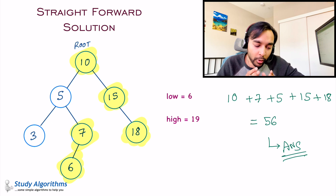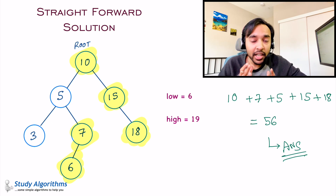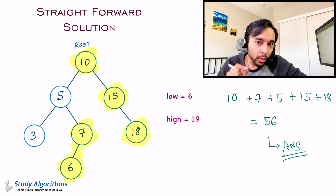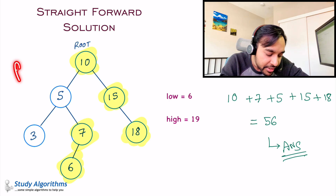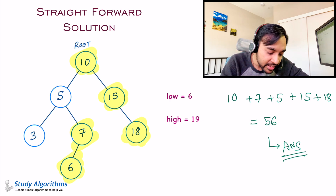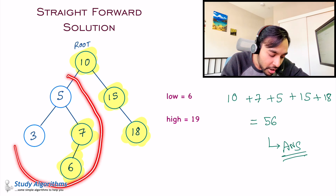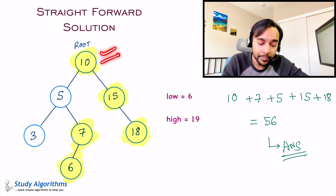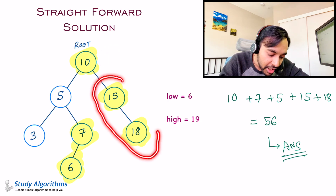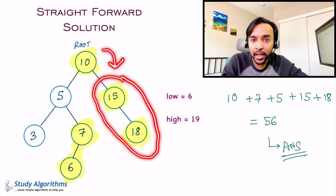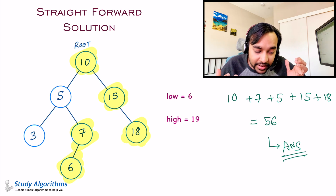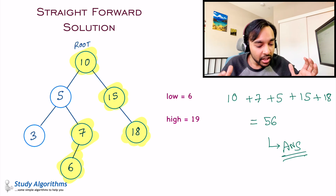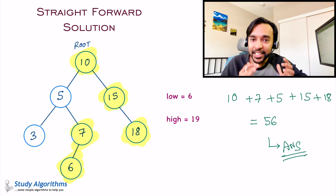Now this approach works and it is very correct — it will give you a correct answer every time. But do you notice an important thing? We never took any advantage of the fact that this tree is a binary search tree. A binary search tree means that the left portion will have all smaller elements than 10, and the right subtree will have all elements greater than 10. We are never utilizing this property anywhere. So there is a solution out there that is more efficient than this. Let us take a look at it now.